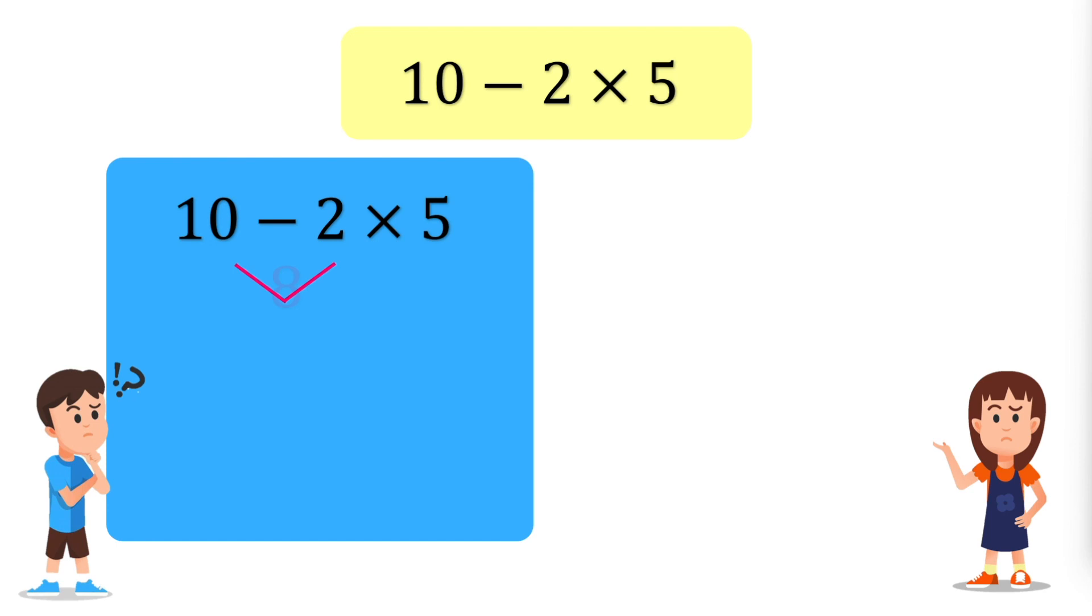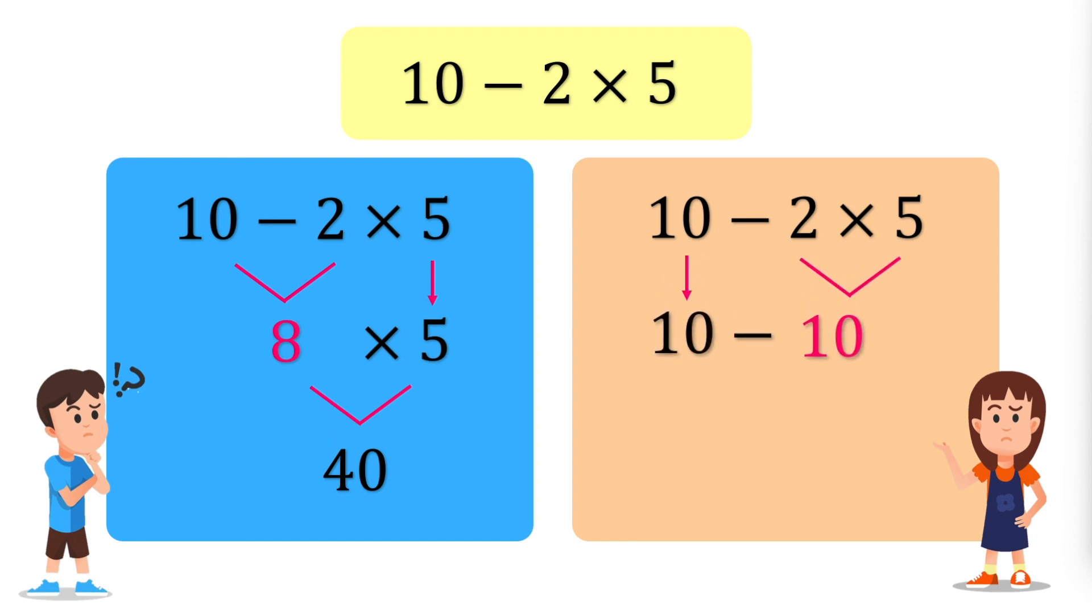Let's say Johnny subtracts first and then multiplies, resulting in 40. However, if Susie multiplies first and then subtracts, she gets zero. Who is correct in this scenario? This shows the order matters and why the order of operations is important. Without it, there would be a lot of confusion.